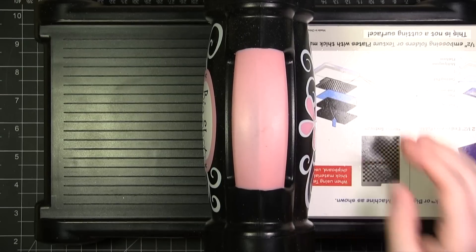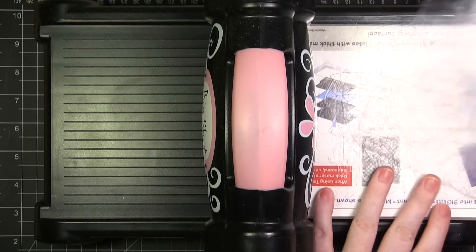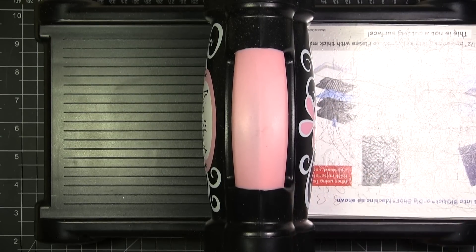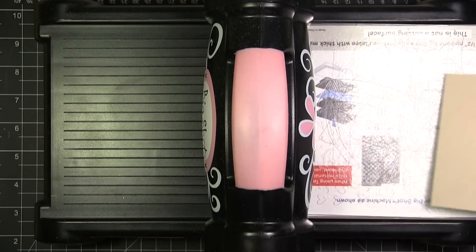I have my Big Shot here and I have it open to no tabs because I'm going to show you embossing first. I have one cutting plate down and I'm going to take my piece of card stock. Here's my card stock and my embossing folder.